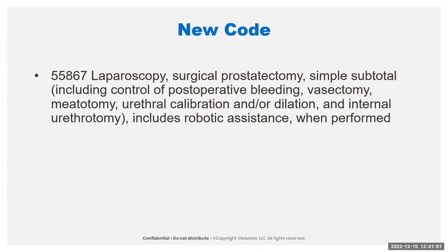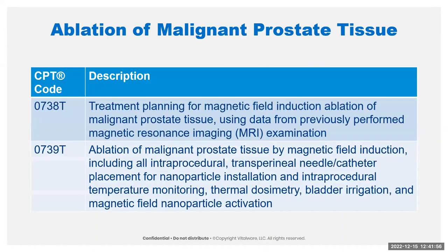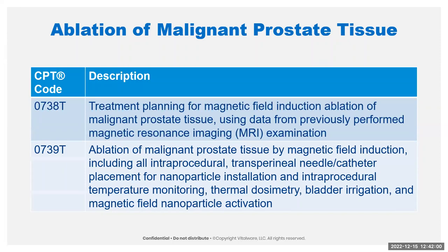For new Category 3 codes for prostate tissue, they have the ablation of malignant prostate tissue — where the previous code was for benign. The 0738T is for the treatment planning and the 0739T is for the procedure itself. What happens is magnetic fluid is injected into the prostate, and then the patient returns usually on a weekly basis for some thermal treatment that lasts about 60 minutes. It is very non-invasive, but the thermal treatment ablates the tissue. It really limits the damage to the surrounding areas and is a lot less intensive than the radical or more intense ablation.